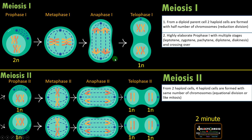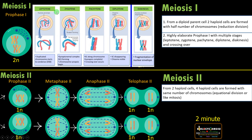Difference number two. In meiosis I, the first stage — prophase — is elaborated with multiple stages: Leptotene, Zygotene, Pachytene, Diplotene, and Diakinesis.